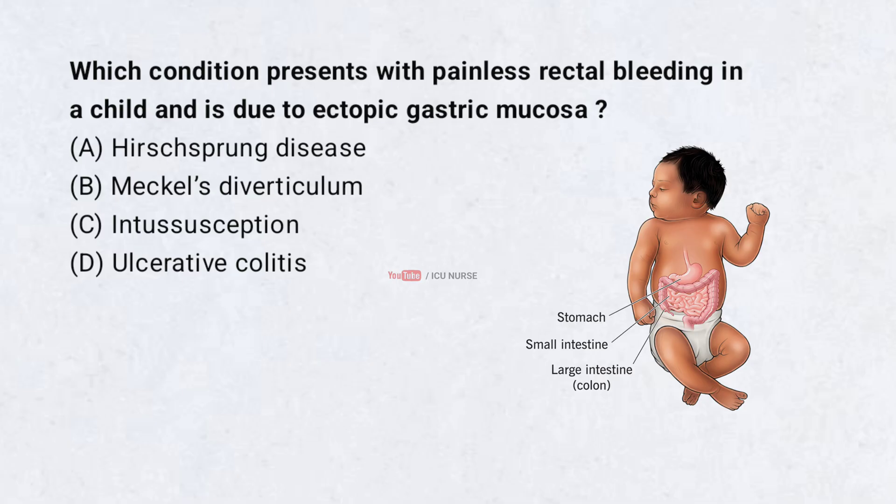Which condition presents with painless rectal bleeding in a child and is due to ectopic gastric mucosa? A. Hirschsprung disease. B. Meckel's diverticulum. C. Intussusception. D. Ulcerative colitis. Correct answer: B. Meckel's diverticulum.